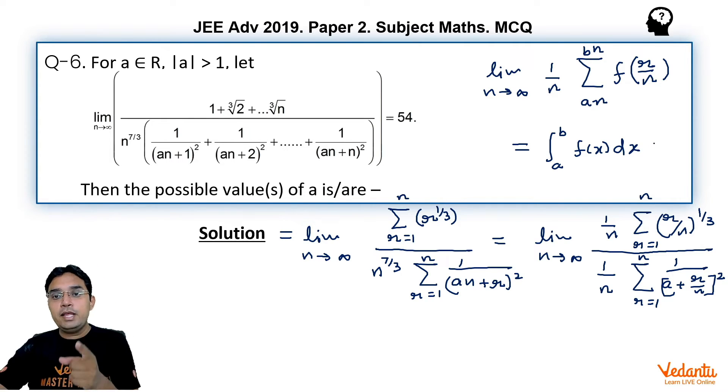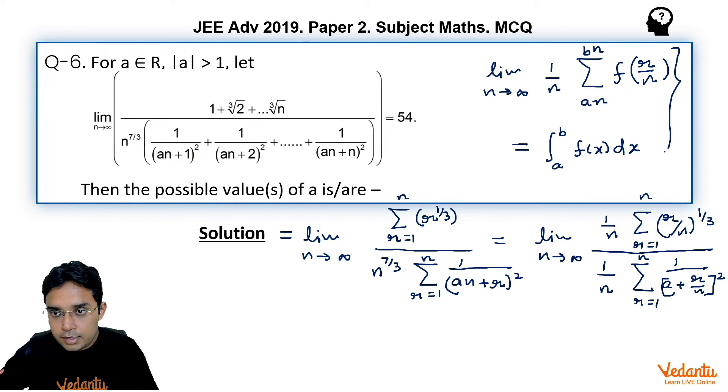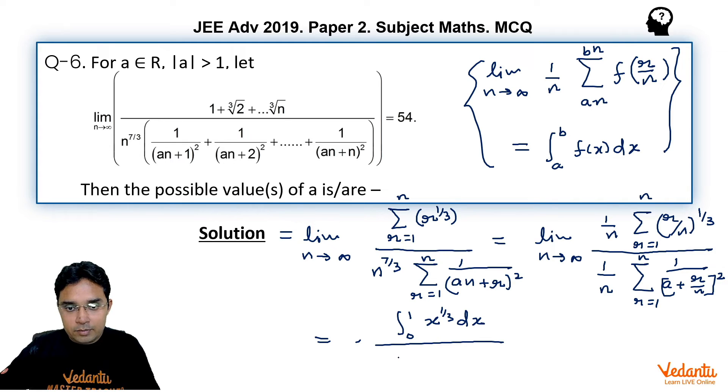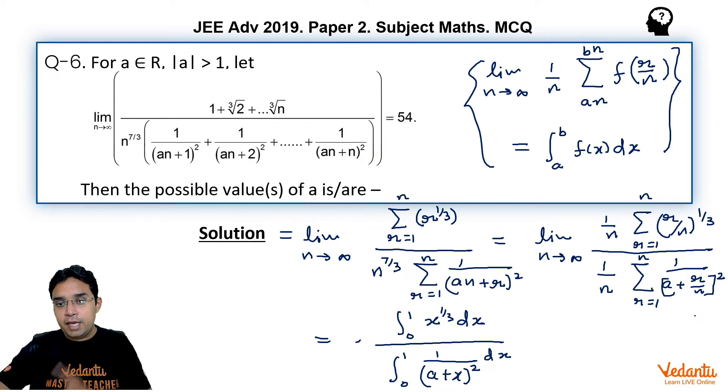Now as I was telling you in this concept to be used here you can see this numerator becomes equal to 0 to 1 x power 1/3 dx in denominator it becomes 0 to 1, 1 upon (a + x) whole square dx, because r upon n will be written as x as r is equal to 1 this r upon n will tend to 0 as n is approaching to infinity and when r is equal to n, r upon n will be equal to 1.